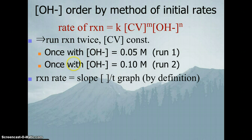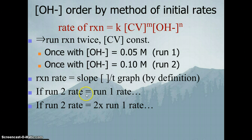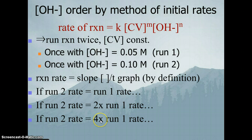Then we run the reaction again where we double the concentration of hydroxide ion but keep the crystal violet concentration the same. If the rate does not change, the reaction is 0th order in hydroxide ion. If the rate goes up by a factor of 2, it's first order. If run 2 rate is 4 times that of run 1, it's second order. So when we double the hydroxide concentration, one of these three things should happen: the rate stays the same, doubles, or quadruples.